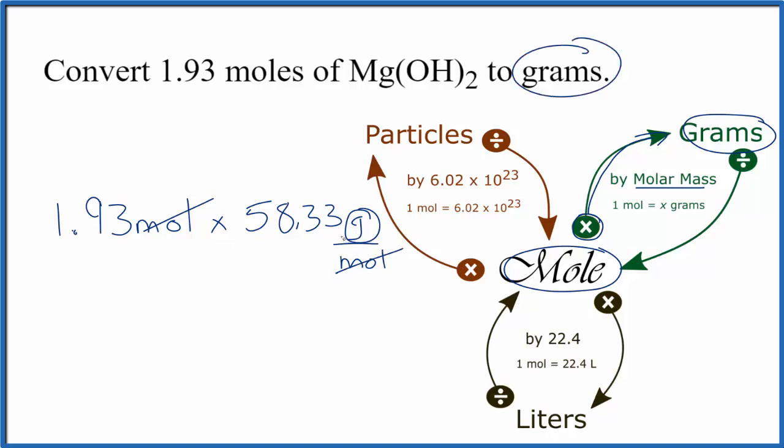When we do the multiplication, we get 112.58 grams of magnesium hydroxide.